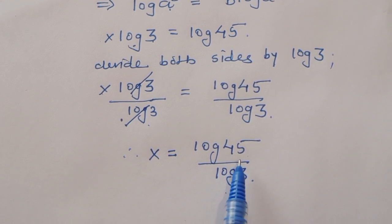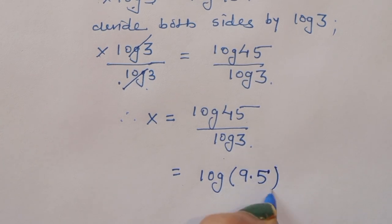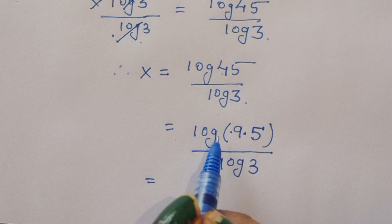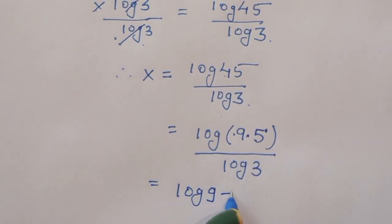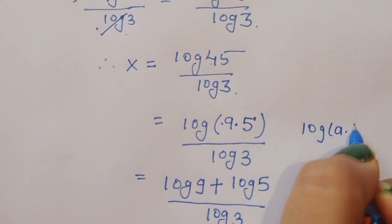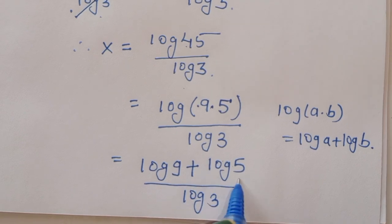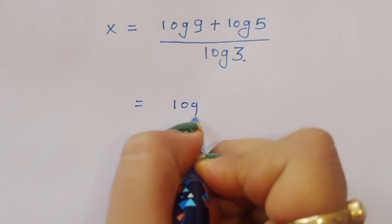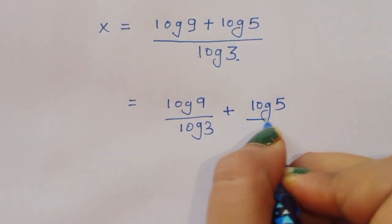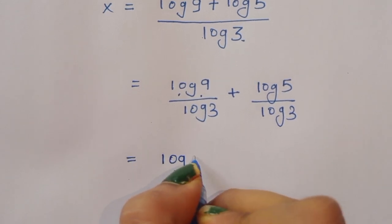Now for log of 45, we can write this as log of 9 times 5, divided by log of 3. Using the formula log(a × b) = log(a) + log(b), we write log of 9 plus log of 5, divided by log of 3. Separating terms: log of 9 divided by log of 3, plus log of 5 divided by log of 3.